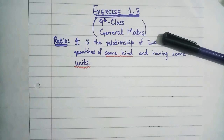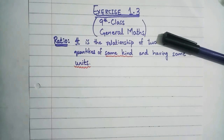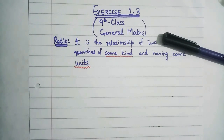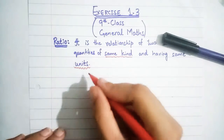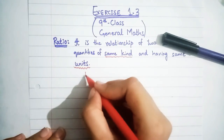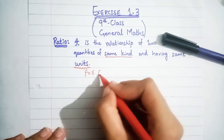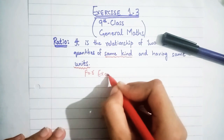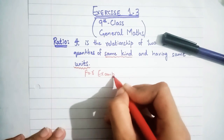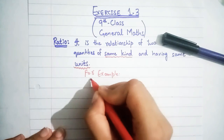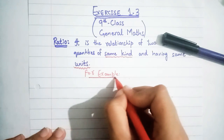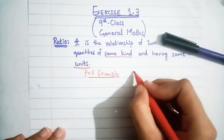For example, if one quantity is in kilometers and another is in meters, you cannot directly find the ratio. You must first convert them to the same unit.